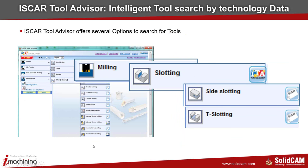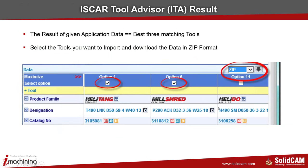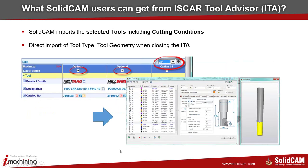When the tool advisor starts, you have application types in the main entrance — milling, turning, grooving, and hole making. For example, doing a milling shouldering, you go down through the feature tree, input application data, and finally get three best-matching tools as results. After selecting which tool you want, we download the zip file and it is imported directly to the tool table.